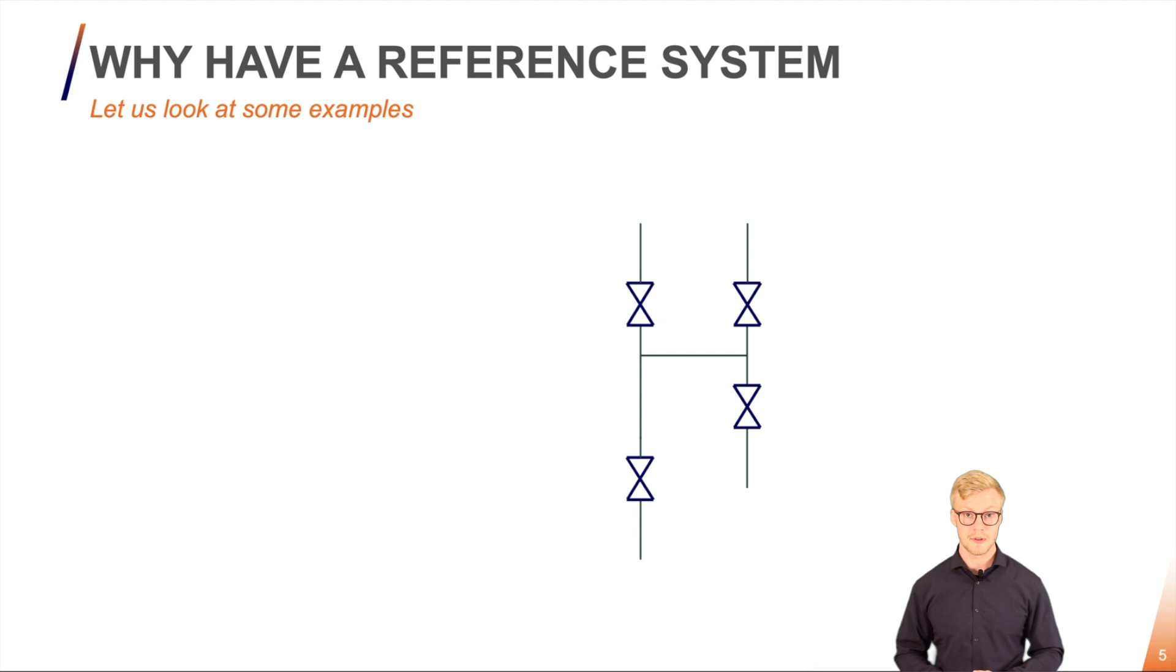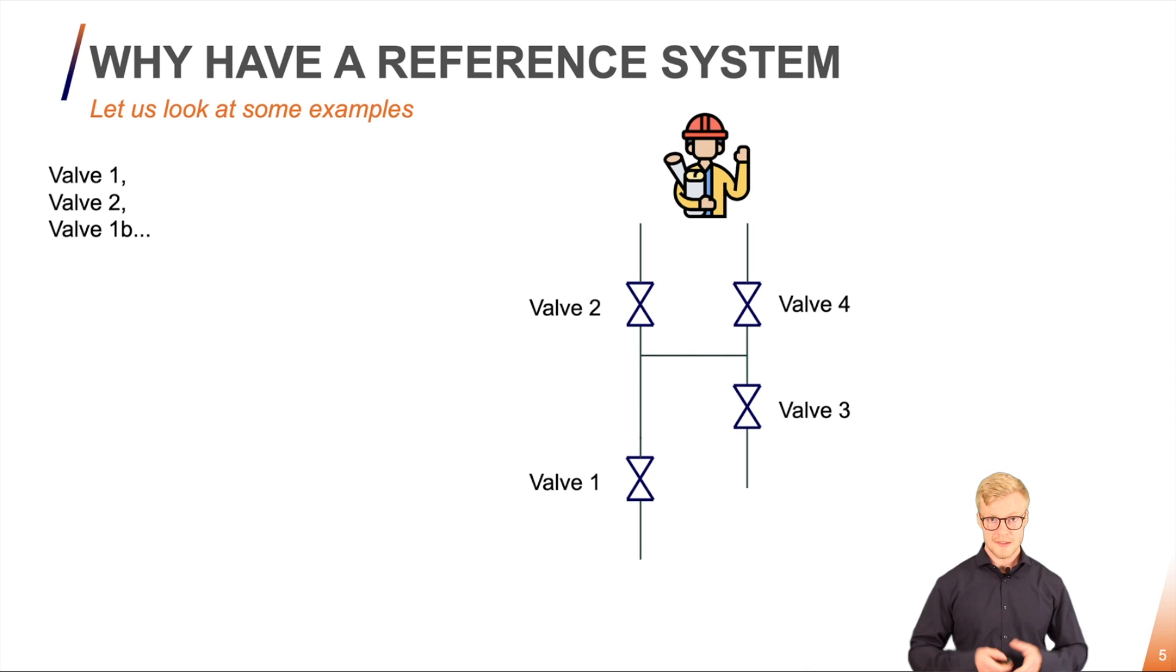So let's try to think of something. Let's try to think of the most straightforward thing. Let's just call them valve 1, 2, 3 and so on. Enumerate upwards.